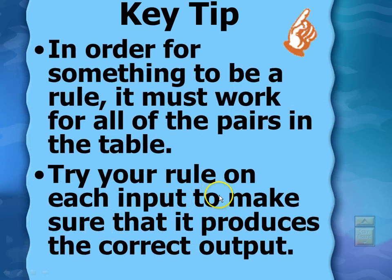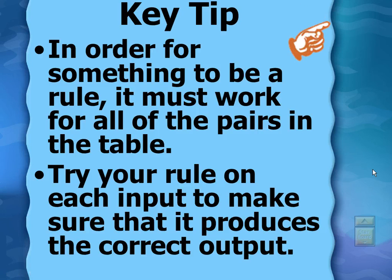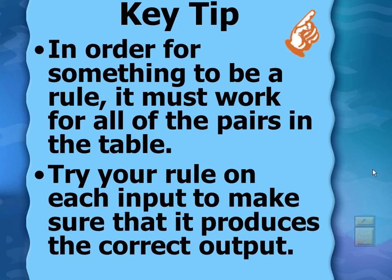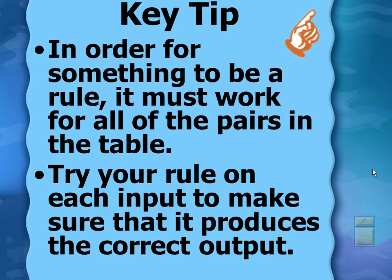The key tip for today is that in order for something to be a rule, it must work for all of the pairs in the table. So you want to try your rule on each input to make sure that it produces the correct output — we're not just finding the rule for the first two numbers and stopping there.